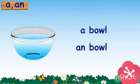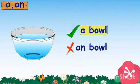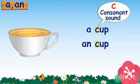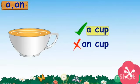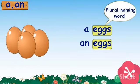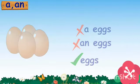It's a ball — ball begins with the letter B, which is a consonant sound, so we use A ball. Next, there is only one cup, and cup starts with a consonant sound, so we use A cup. Eggs — it is a plural naming word. There is more than one egg, so we can't use A or AN. We will say: these are eggs.